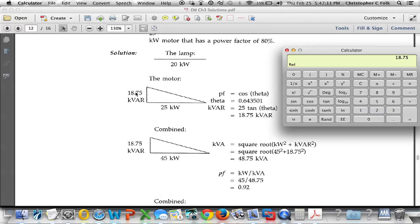So if I take this 18.75, and I square it using this key, squared. And to that I add plus 25 squared equals, and now if I take the square root of that, it's going to tell me the length of this hypotenuse. And that is known as the total power or the apparent power.